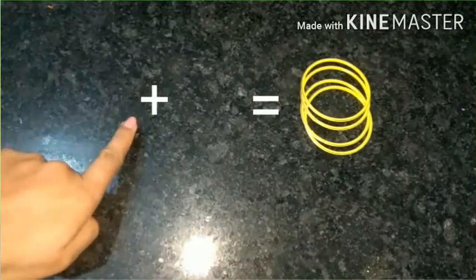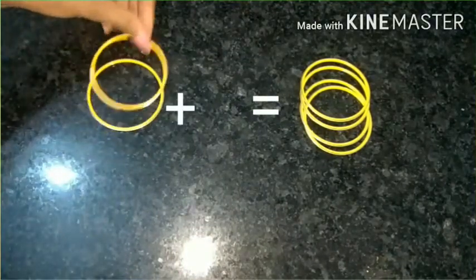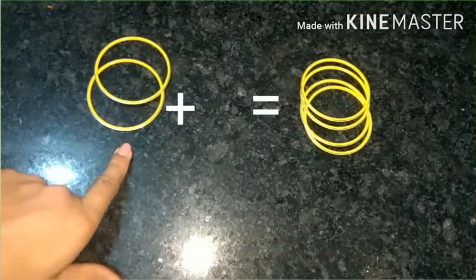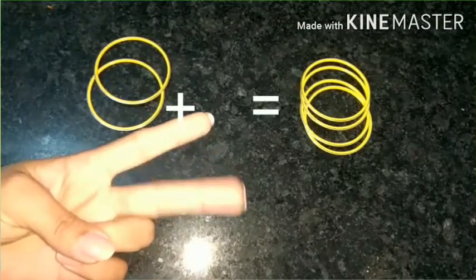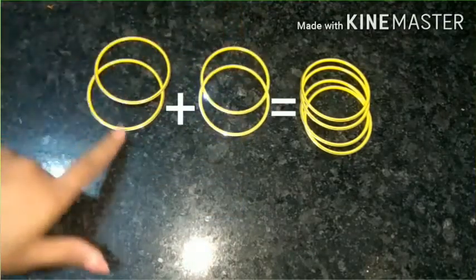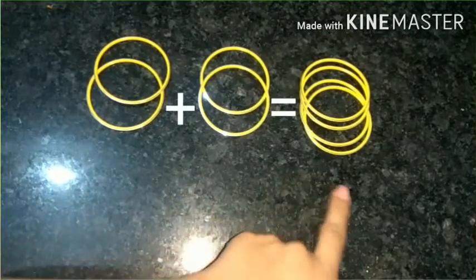Now this time in the first box I am taking two bangles. Let's start counting from two. After two, three, four. It means two more bangles. I want two plus two equals to four.